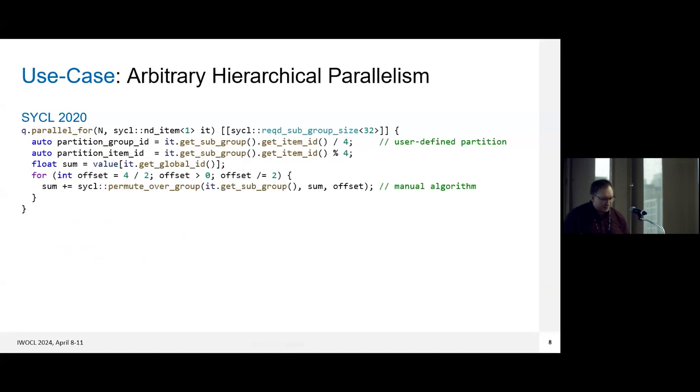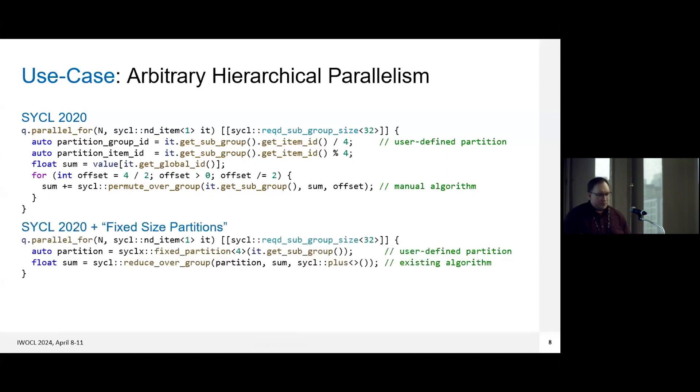So that's the first possible use case. The next would be a way to support arbitrary hierarchical parallelism. So in SYCL 2020, the user is, of course, free to try to use arbitrary index arithmetic and try to keep track of things themselves as a way of creating abstract hierarchies. But if you do that, the implementation really has no clue what you're doing, and it's up to you to make sure that everything is right. However, with something like a fixed size partition, you can make this very explicit and known to the implementation, and then the implementation could help you out with things like barriers and your different group algorithms.